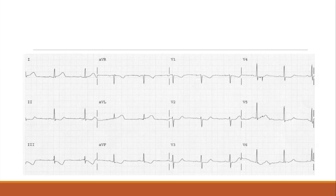Next one — tell me what you see. There's some ST depression in V2. What else? ST changes in V3 and AVF. So we've got V3 and AVF for sure — two contiguous leads with ST depression.